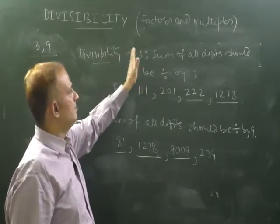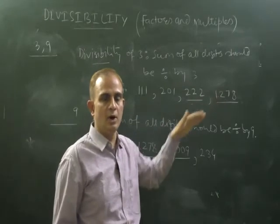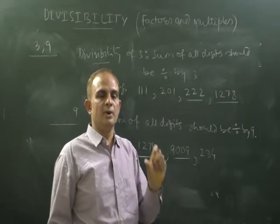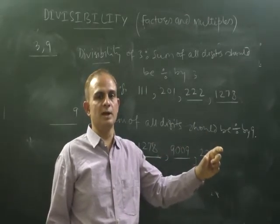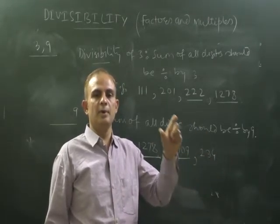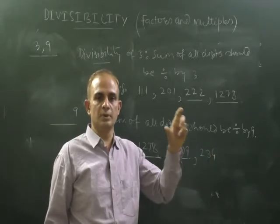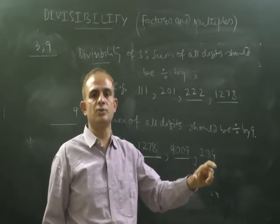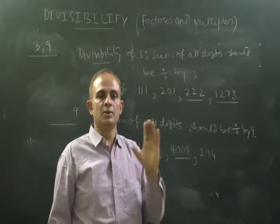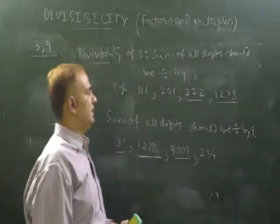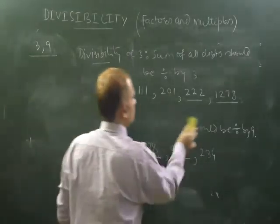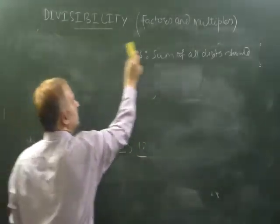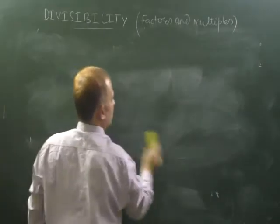For example, 81: 8 plus 1 equals 9, divisible by 9. For 1278: sum is 18, divisible by 9. For 9009: 9 plus 9 equals 18, divisible by 9. For 234: 2 plus 3 plus 4 equals 9, divisible by 9. So the divisibility test for 3 and 9 are the same pattern — the digit sum must be divisible by 3 or by 9 respectively.